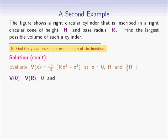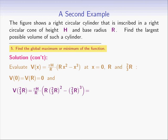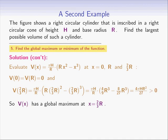It is easy to see that v(0) and v(r) are both 0. Computing v(2r/3): this equals (pi h / r) multiplied by r times (2r/3) squared minus (2r/3) cubed, which simplifies to (pi h / r) times (4/9 r cubed minus 8/27 r cubed), giving 4 pi h r squared divided by 27. Since this is positive and the endpoint values are 0, the global maximum of v occurs at x equals 2r/3, with maximum volume 4πhr²/27.